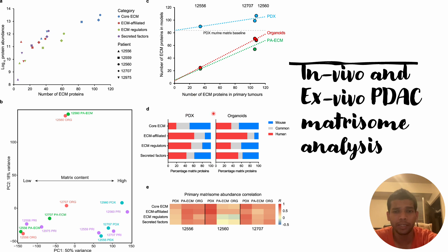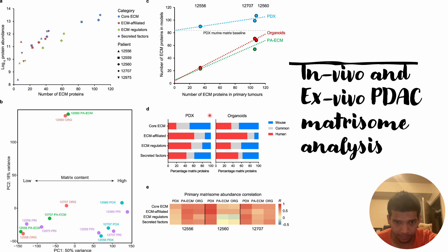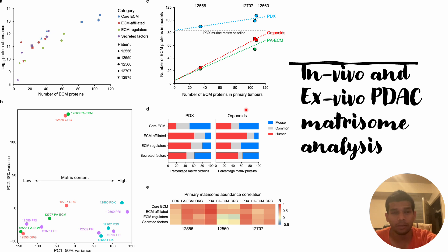They then checked the different compositions of the PDX and organoid models. What they found is that in the PDX and organoid models, about 50% of the core ECMs are related to the mouse, whereas very few ECMs are related to humans. This could be one of the reasons why PDX and organoid models do not closely resemble the in vivo pancreatic cancer cells.